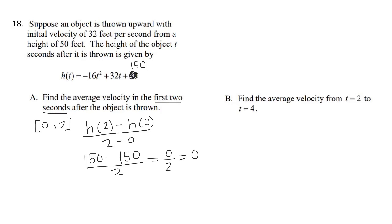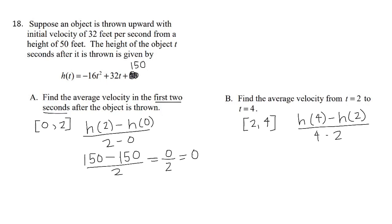Now looking at the interval from 2 to 4 seconds: we set up H(4) − H(2) over 4 − 2. H(4) is 22, minus H(2) which is 150, all over 2. Our final answer is negative 64 feet per second.